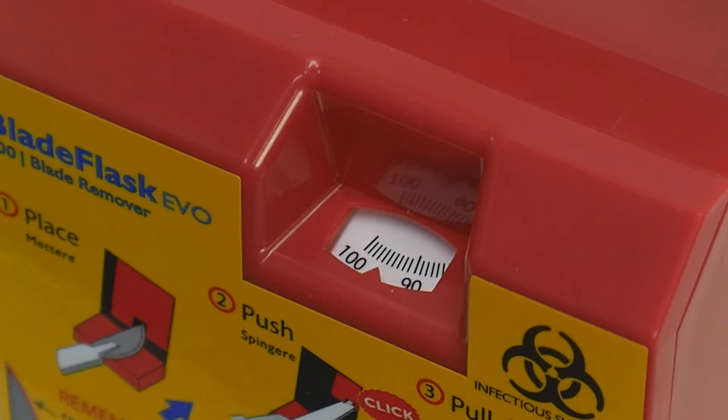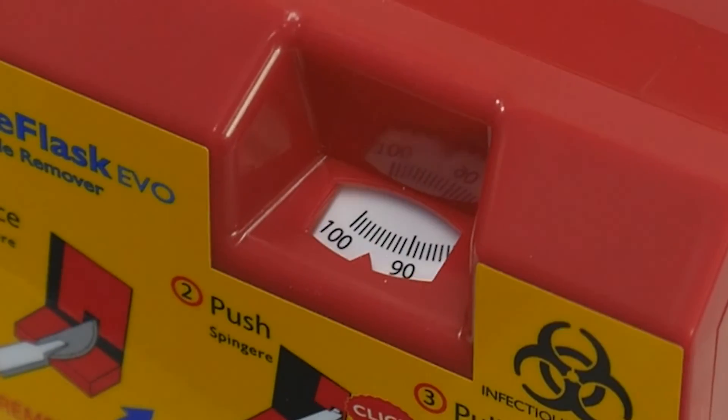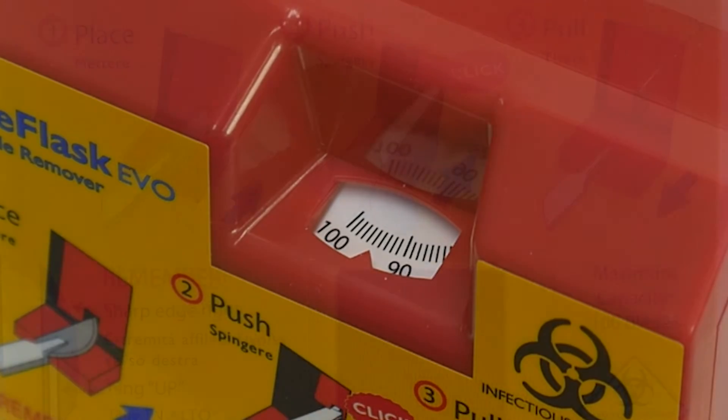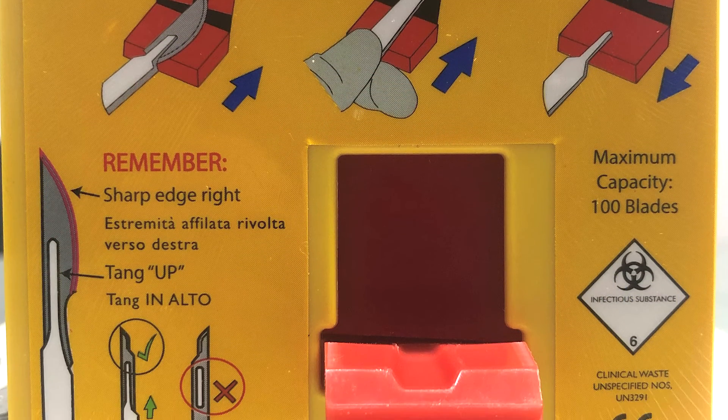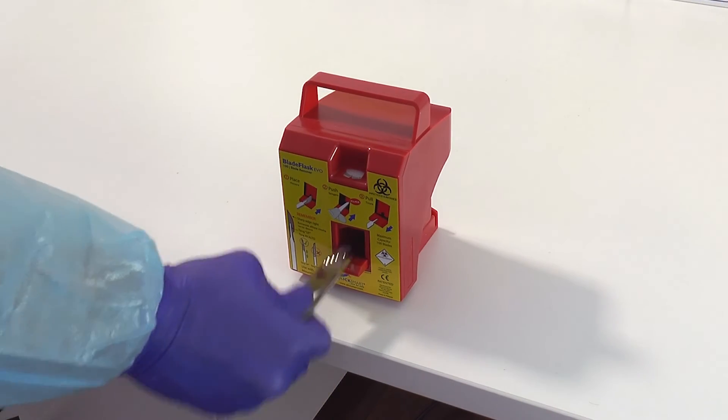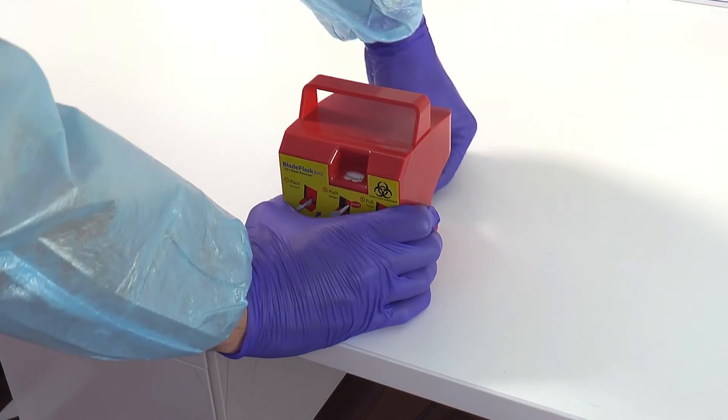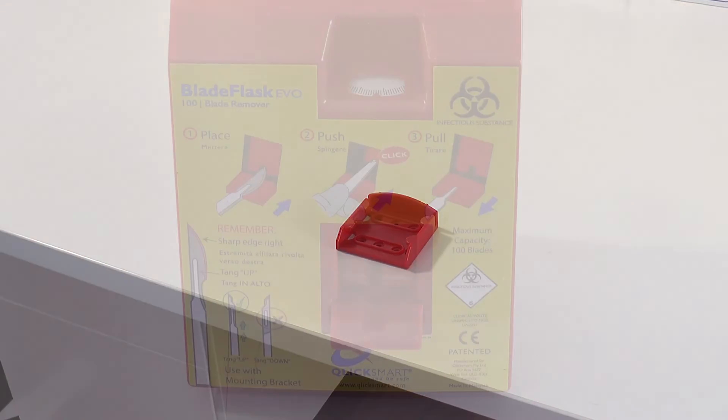The easy-to-see counter on top of the device shows you the amount of scalpel blades you can remove. It counts down from 100 to 0. When full, the automatic shutoff mechanism prevents the user from overfilling the Blade Flask Evo. To dispose the Blade Flask Evo, simply slide it off the mounting bracket and dispose of it as medical waste, or as a sharps container as it meets the ISO 23907 standard.